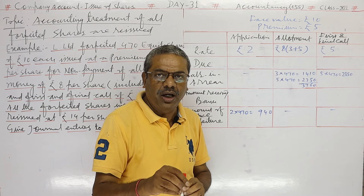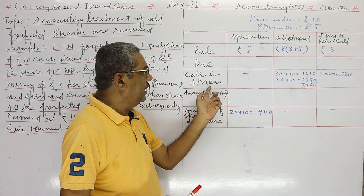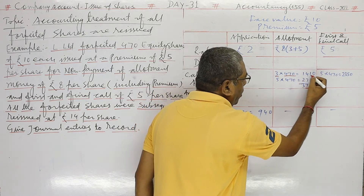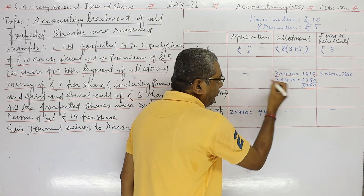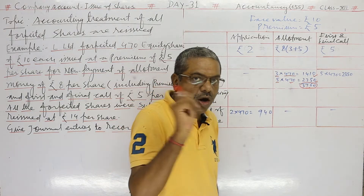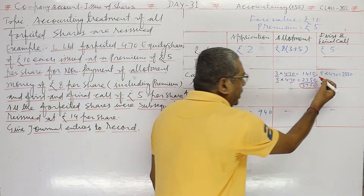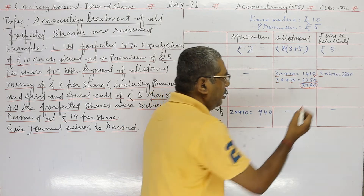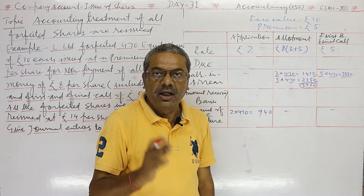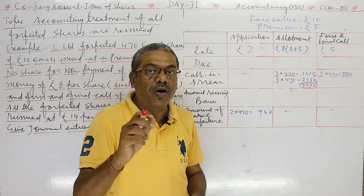The shareholder is unable to pay in allotment and first and final call, so calls in arrears: rate of allotment is 3, number of shares 470 gives 1410; rate of premium is 5, number of shares 470 gives 2350. For first and final call, rate is 5, number of shares 470 gives 2350. That means these amounts were not paid by the shareholder. Non-payment was on allotment and first call — he only paid on application.